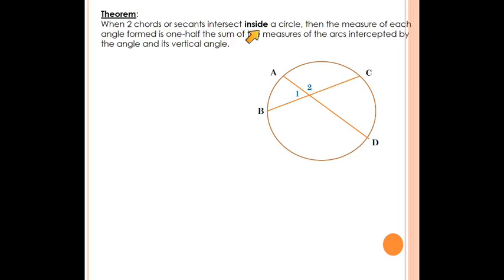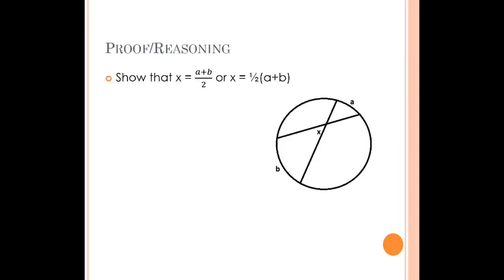Next, we're proving the theorem about chords that intersect inside a circle: to find angle X, you take arc A plus arc B and divide by two. To do this proof, I'll construct an auxiliary segment. By doing so, I create an inscribed angle that is inscribed to arc B, giving it a measure of one half B.